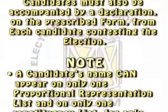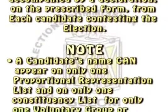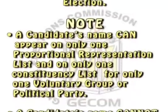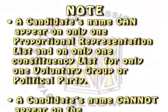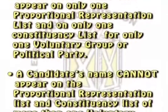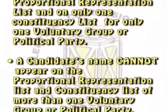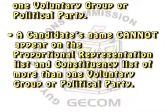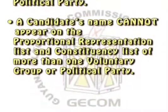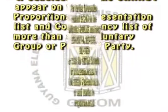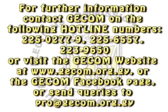Each list of candidates must also be accompanied by a declaration on the prescribed form from each candidate contesting the election. Note: a candidate's name can appear on only one proportional representation list and on only one constituency list for only one voluntary group or political party. A candidate's name cannot appear on the proportional representation list and constituency list of more than one voluntary group or political party.